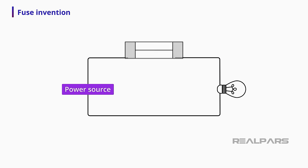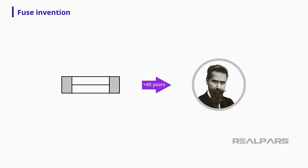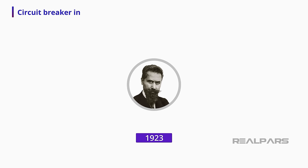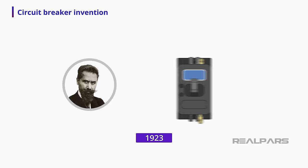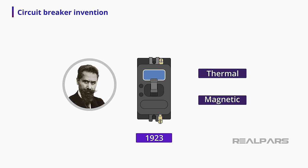This impasse was only resolved more than 40 years later by an inventor named Hugo Stotz. In 1923, Stotz launched the first compact device that combined the functions of thermal and magnetic protection on the market, produced in Mannheim, Germany. That was the first commercial circuit breaker.